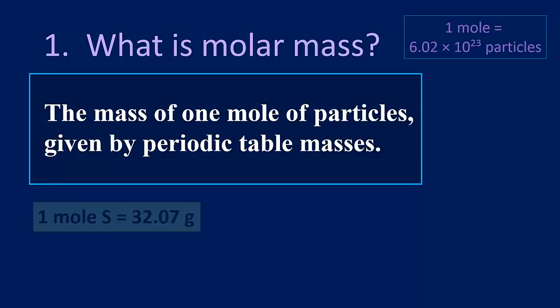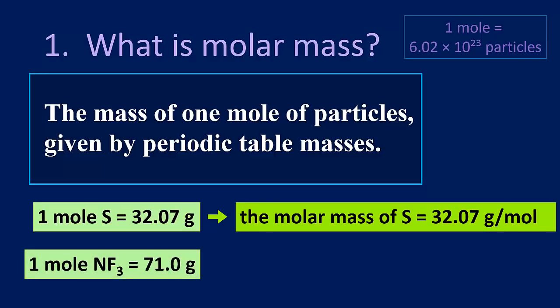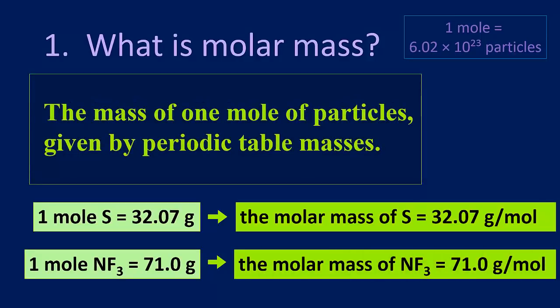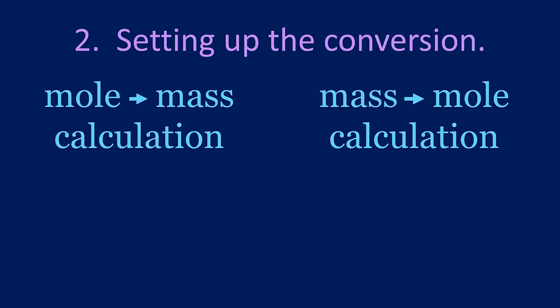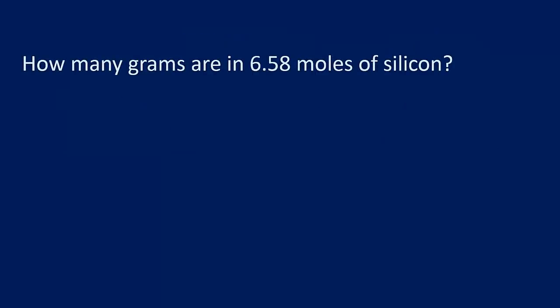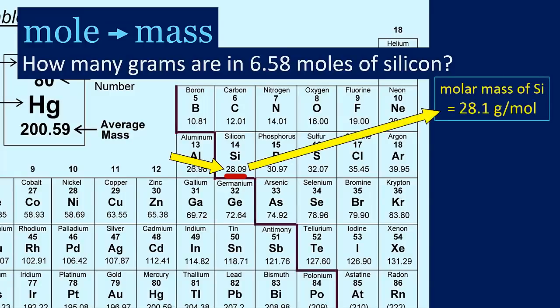Let's look at our examples. One mole of sulfur is 32.07 grams, so the molar mass of sulfur is 32.07 grams per mole. One mole of NF3 is 71.0 grams, so the molar mass of NF3 is 71.0 grams per mole. Now, let's take a look at how we can use molar mass to convert from moles to mass or mass to moles. For example, how many grams are in 6.58 moles of silicon? We are given moles and want to get to mass, so this is a mole to mass calculation. The connection of moles and mass will always be found on the periodic table. We find that silicon's molar mass is 28.1 grams per mole, rounded to the nearest tenth.